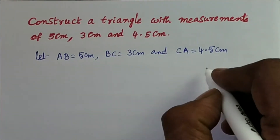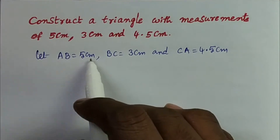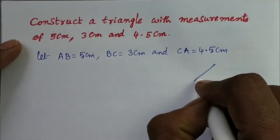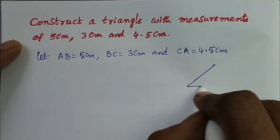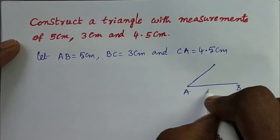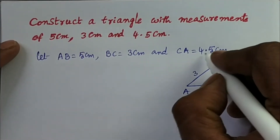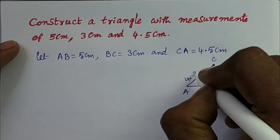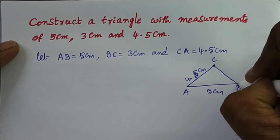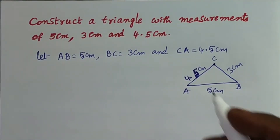Draw a rough diagram with these measurements. Take AB as the base. AB is equal to 5 cm, CA is equal to 4.5 cm, and BC is equal to 3 cm. This is the rough diagram.